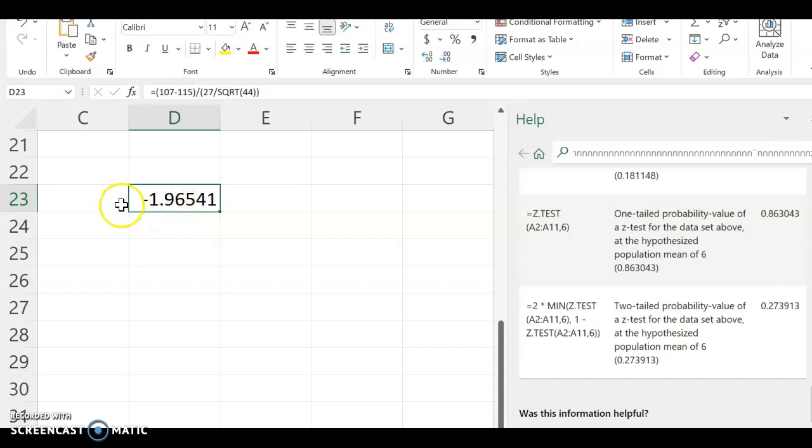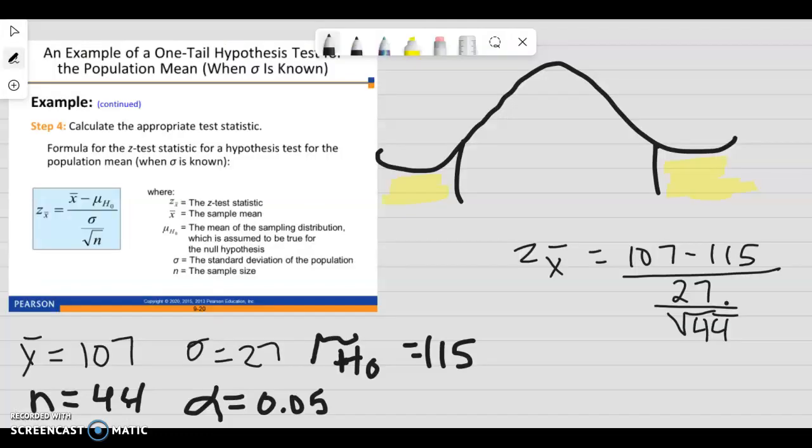Okay, so our test statistic is negative 1.97. So that's what we're testing. So I'm going to go ahead and write that down. And on your homework, you would put that in as your answer for your test statistic, negative 1.97.